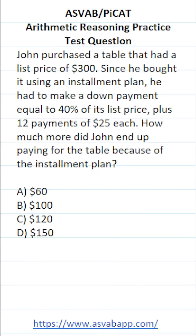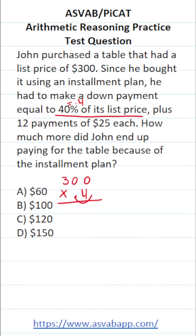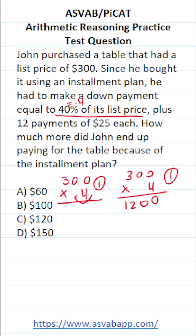The first thing we want to calculate is 40% of the list price of this table, which is $300. We multiply by the decimal equivalent of 40%, which is 0.4, giving us 300 times 0.4. We shift the decimal in 0.4 one place to the right, making this 300 times 4, then move one decimal back into our answer. 4 times 0 is 0, 4 times 0 is 0, 4 times 3 is 12. Bringing in the decimal, the down payment is $120.